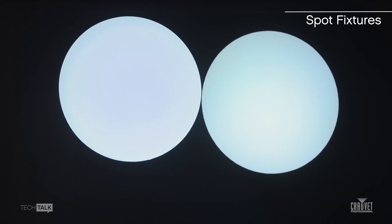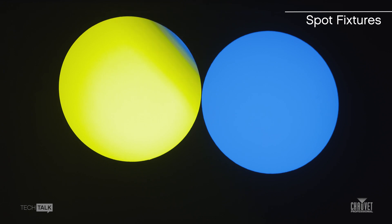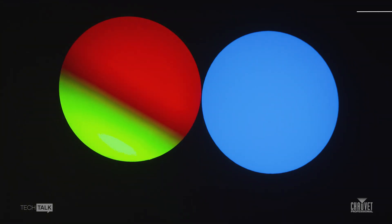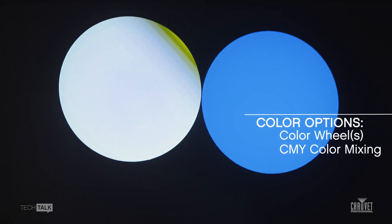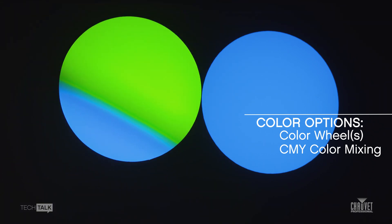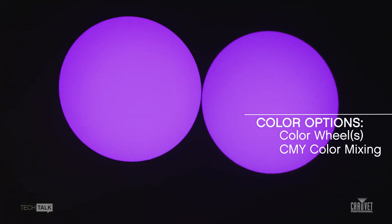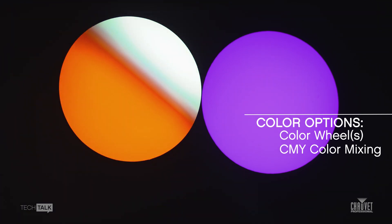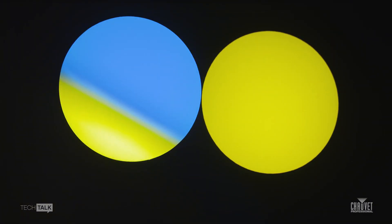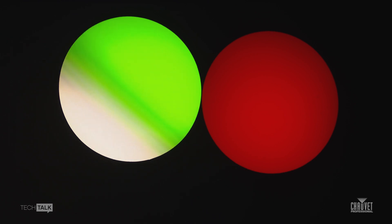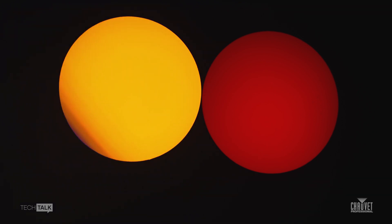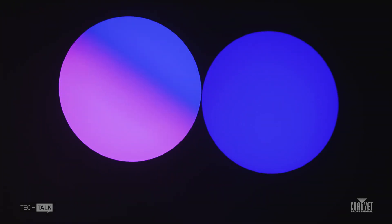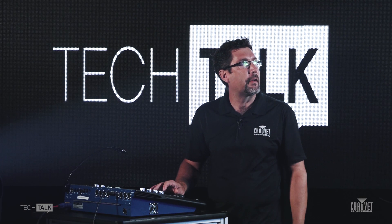Taking a look at spot fixtures — spot fixtures are a more precise lighting instrument, designed to cover a specific object in a space. Spot fixtures always have color in them. We're looking at the Rogue R3 spot and the MK1 spot in the Maverick family. The MK1 offers CMY color mixing, while the R3 spot uses two color wheels. Either way, you have the ability to cast color onto your stage pretty easily. You have a little more color option with CMY color mixing, but you do have options with just a color wheel as well. Doing split colors with a color wheel is a neat effect sometimes.